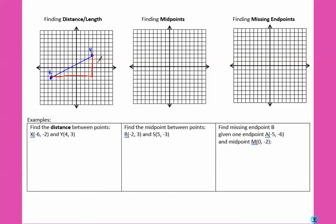And since these are vertical and horizontal lines, we can count the boxes. So 1, 2, 3, 4, 5. And 1, 2, 3, 4, 5, 6, 7, 8, 9, 10.